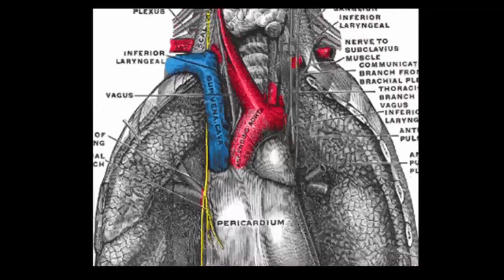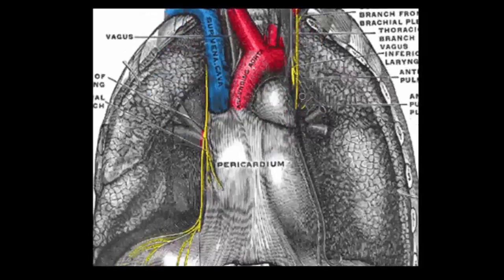That's the right phrenic, and if we come over and pick up the left phrenic — here's the left phrenic coming down into the mediastinum, before running over the left side of the pericardium on the free border of the pericardium, giving off sensory branches to the pericardium and to the mediastinum, before providing motor branches to the left hemidiaphragm and sensation to the diaphragmatic peritoneum on that side.